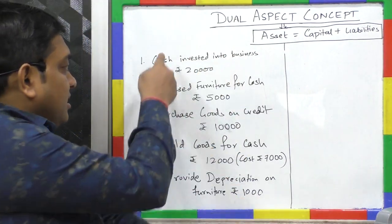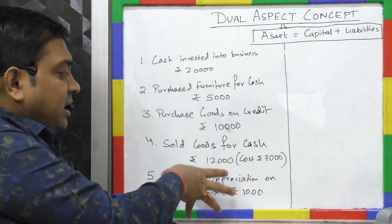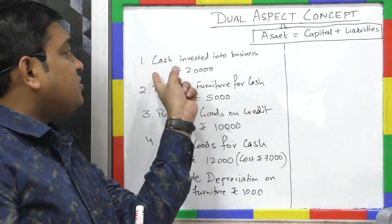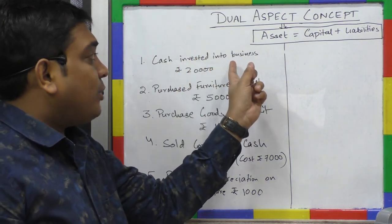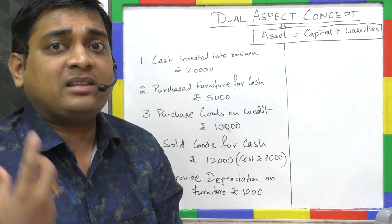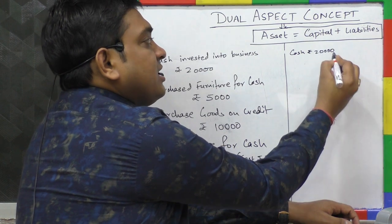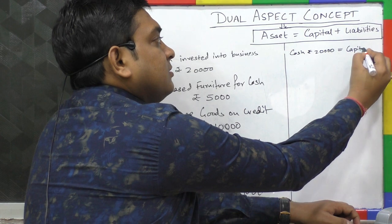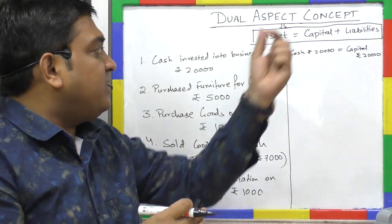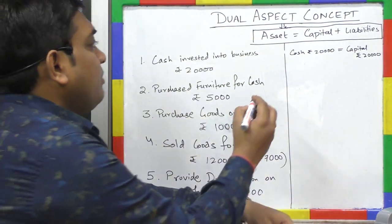I have taken a number of examples to develop the accounting equation from these transactions. The first transaction is cash invested into business rupees 20,000. The receiving aspect is cash and the giver is the owner, that is capital. So the equation is: Cash ₹20,000 = Capital ₹20,000.